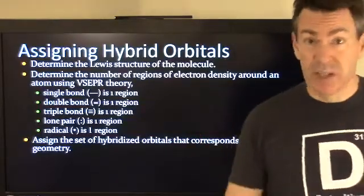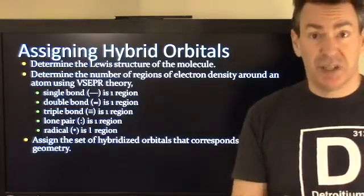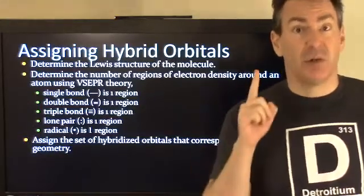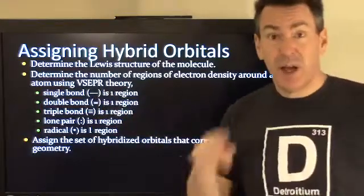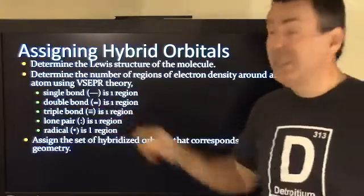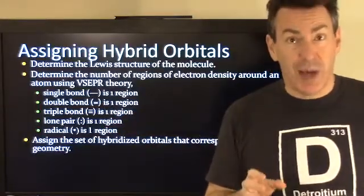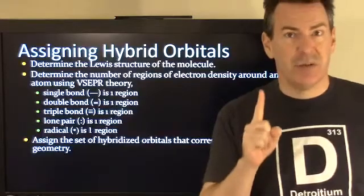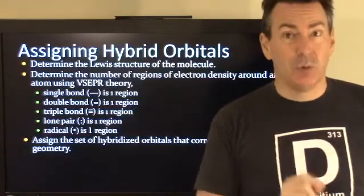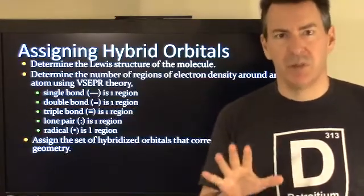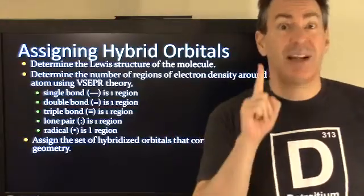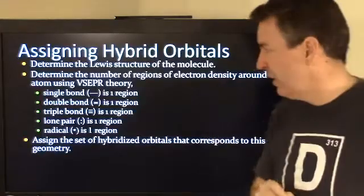As you're trying to identify these regions, here are your possible region types. Any kind of bonding area is considered one region — whether that's a single bond, a double bond, or a triple bond. A double bond, even though you see two lines between two atoms, counts as just one region, not two. A triple bond is also identified as just a single region. That's one of the most common misconceptions — students want to assign three regions for a triple bond, but it's still just one area of electron density.